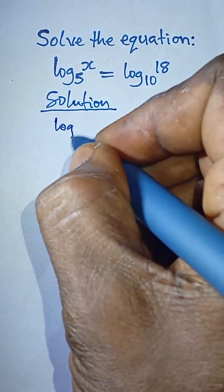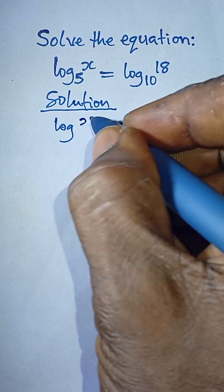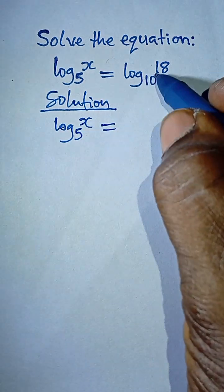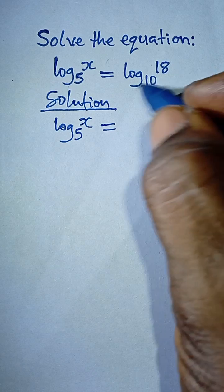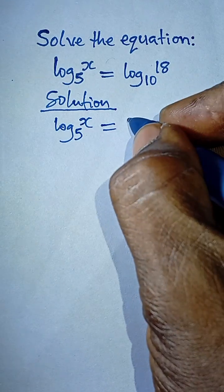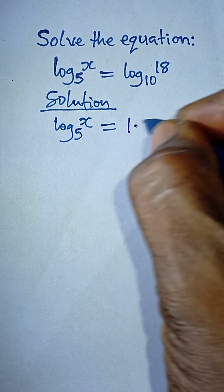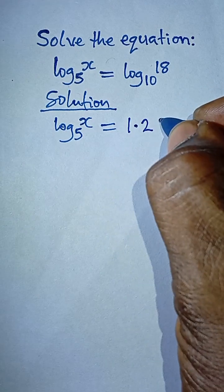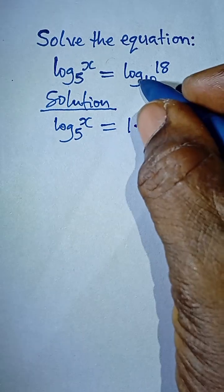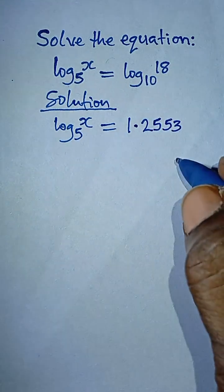So I'm going to say log x to the base 5 equals, from a calculator, log 18 to the base 10. If you simply press the log of 18 from your calculator, you are going to get 1.2553, so that is the value of log 18 to the base 10.